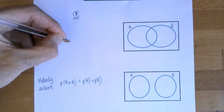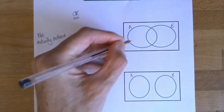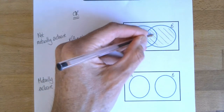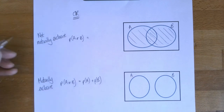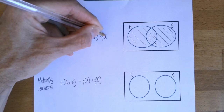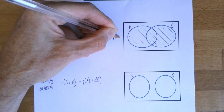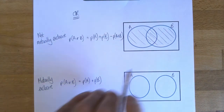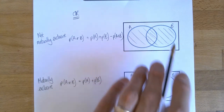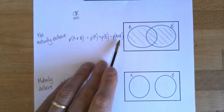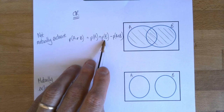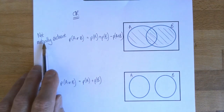If events are not mutually exclusive, there's an overlap. If I just add the probability of A and the probability of B, I've counted the middle bit twice. So for two events which are not mutually exclusive, the probability of A or B is the two probabilities added together minus the overlap. In a question without a diagram, you have to be mindful of this.